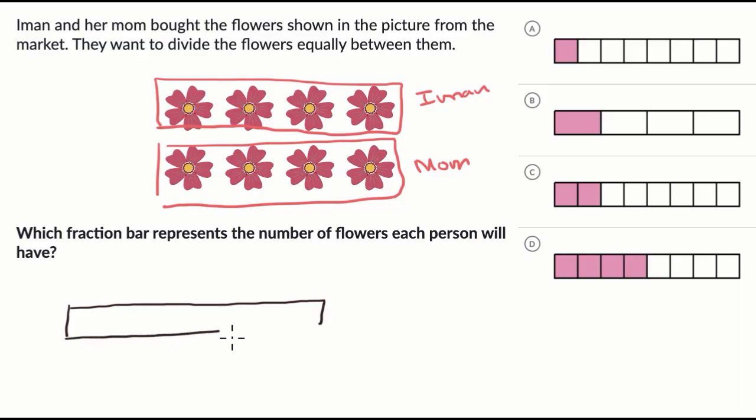Now each flower is what fraction of the whole? Well, there's a total of eight flowers. So each flower, for example, this one right over here, this is one eighth of all of the flowers. So let me take our whole and divide it into eighths.